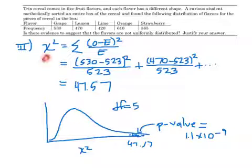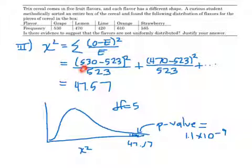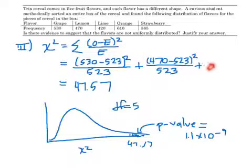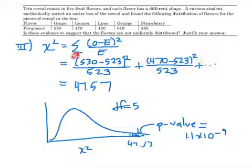Now we're ready to do the math. Chi-squared equals the sum of observed minus expected squared over expected. For grape: observed is 530, expected is 523, so it's (530 minus 523) squared over 523. For lemon: observed is 470, expected is 523, so (470 minus 523) squared over 523. We do that for each of the five flavors — grape, lemon, lime, orange, and strawberry — and add them all up. We get chi-squared equals 47.57.